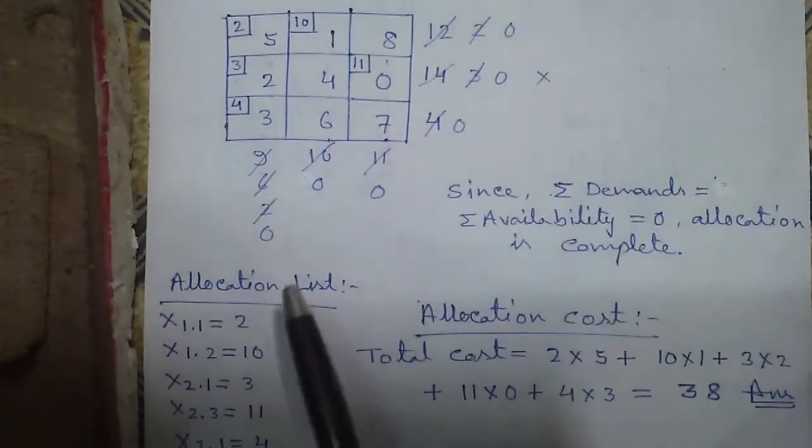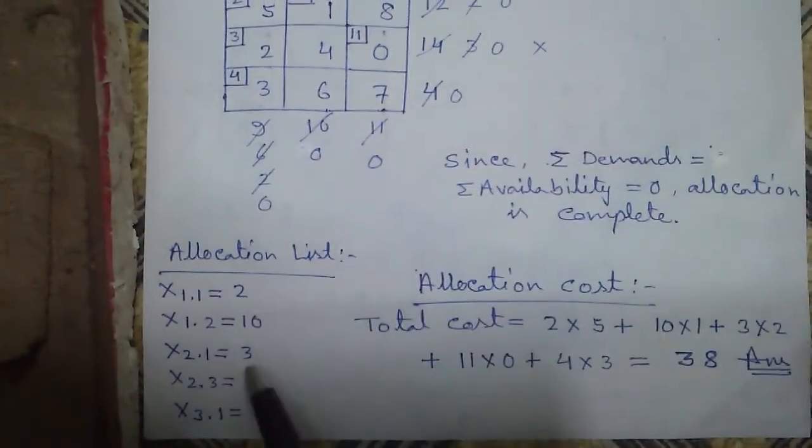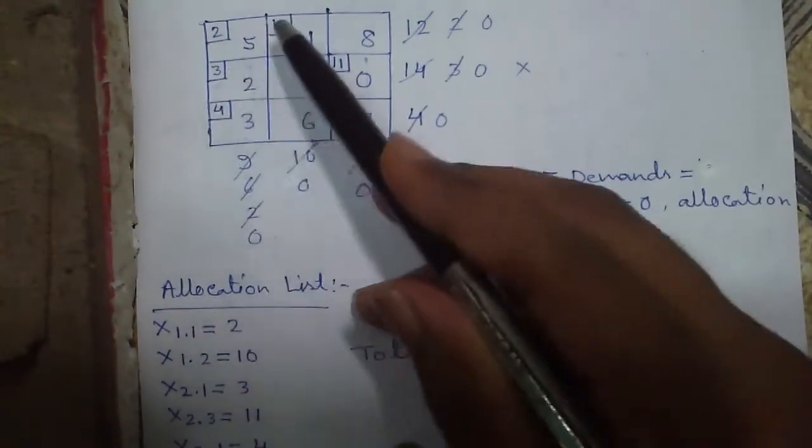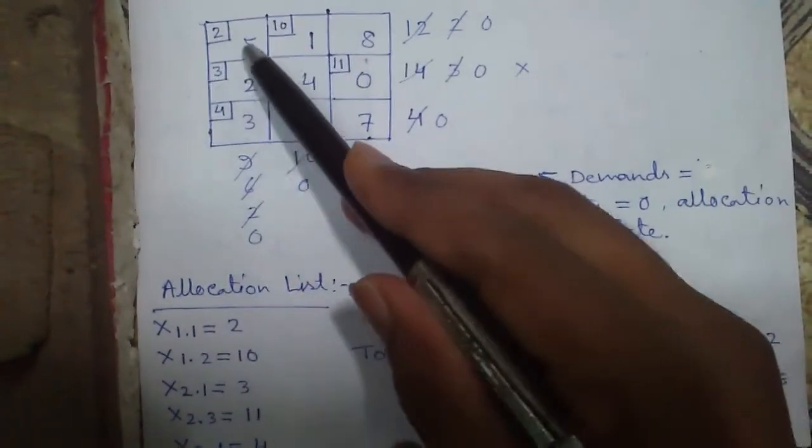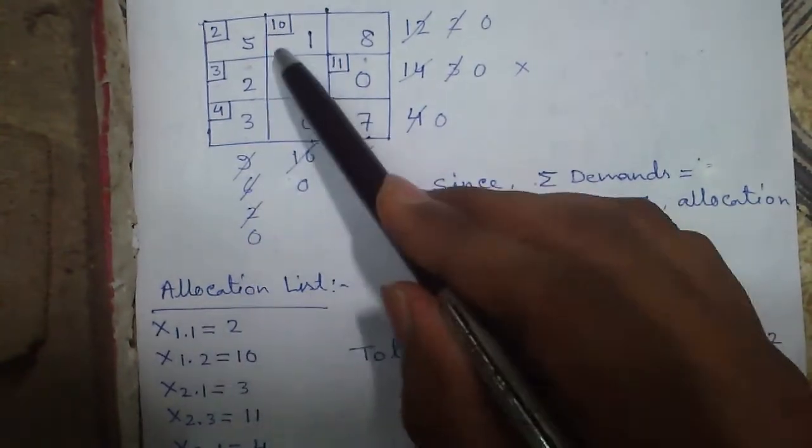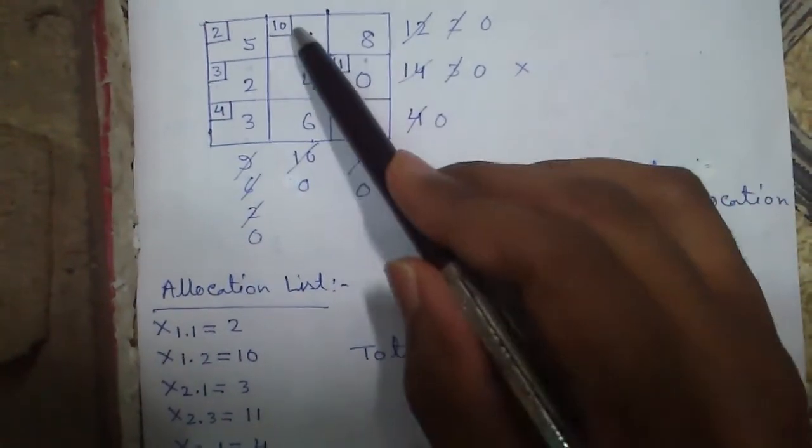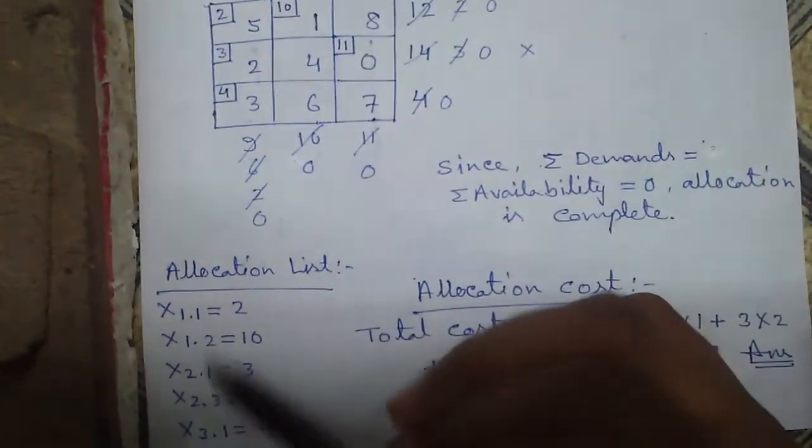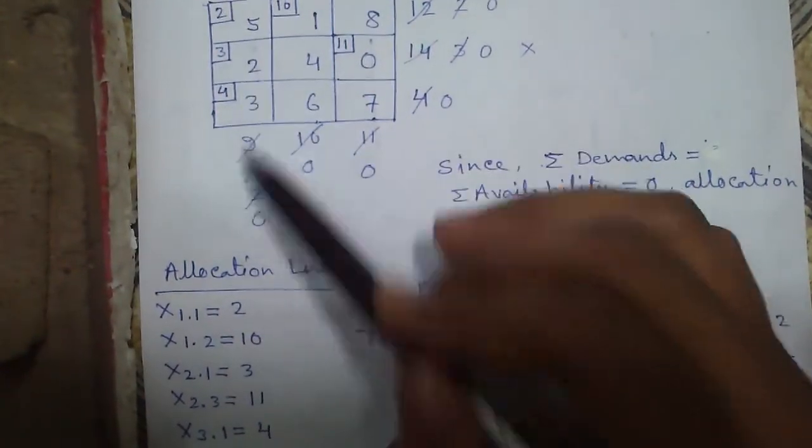Next we have to make the allocation list which is also optional. Our final object is to calculate the allocation cost. This allocation list: we can write x11 means in row 1 column 1 we allocated 2. In row 1 column 2 we allocated 10. In row 2 column 1 we allocated 3. Row 2 column 3 allocated 11. And row 3 column 1 we allocated 4.